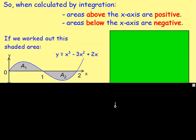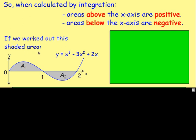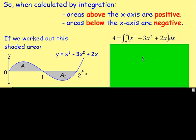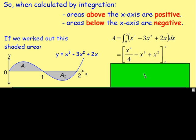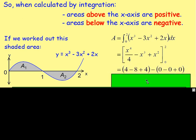Let's try an example. So if you worked out this shaded area, we can see we've got our function — it's x cubed minus 3x squared plus 2x. We've got area 1 and area 2. Let's just work out the whole thing. We're wanting the area that starts at 0 and ends at 2, so we're going to integrate between 0 and 2. Integrating that, you would get x to the power of 4 over 4, minus x cubed, plus x squared. Working that out with limits 2 and 0, the total area would be 0.